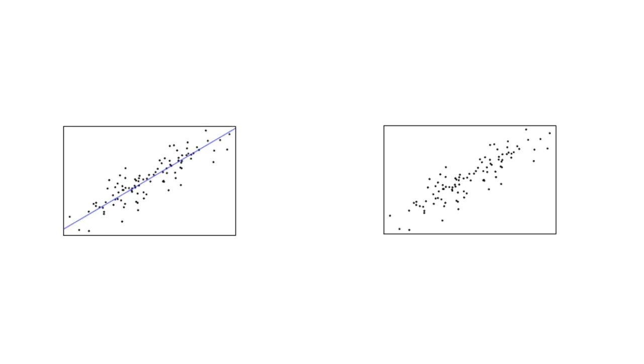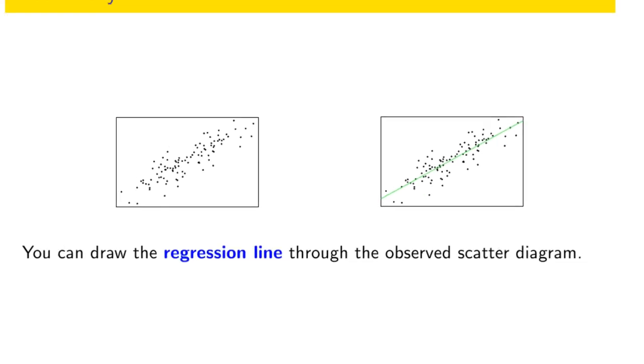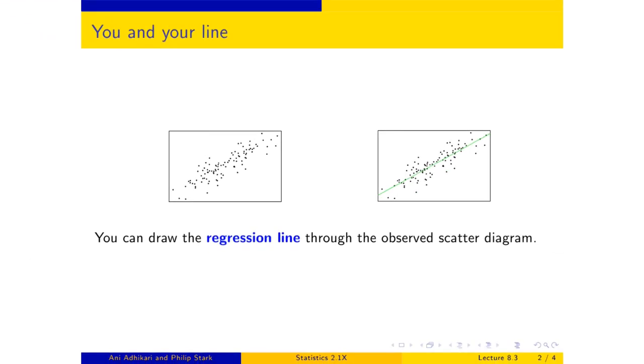Well, we can take STAT 2.1x, which you have very intelligently done. And so what do you know how to do? Well, if you have a scatter diagram, then you know how to put an excellent line through that scatter diagram. Exactly. You put the regression line through the observed scatter.